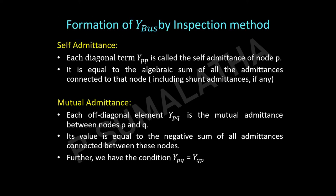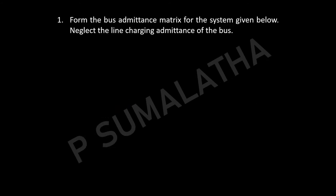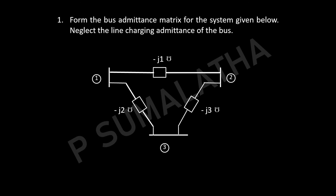Now let us see one example of how to form the Y-bus by using the inspection method. Form the bus admittance matrix for the system given below, neglecting the line charging admittance. We have three buses and three transmission lines. The unit is Siemens. The given values are admittance values: Y12 is connected between buses 1 and 2, Y13 between buses 1 and 3, and Y23 between buses 2 and 3. Y12 equals Y21, Y13 equals Y31, and Y23 equals Y32.